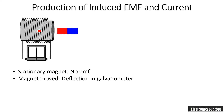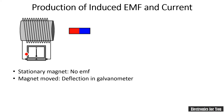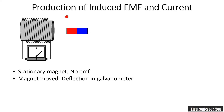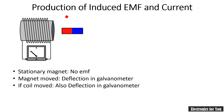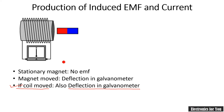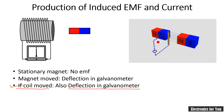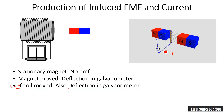Here we can see the magnet is moving and a solenoid — a coil of wire — is connected, and due to that there is a deflection in the galvanometer indicating a flow of current. That is the first way to produce the current. The second way: if we move the coil, the deflection in the galvanometer will be there. Instead of moving the magnet, we are moving the conductor, which is cutting through the magnetic lines of forces.